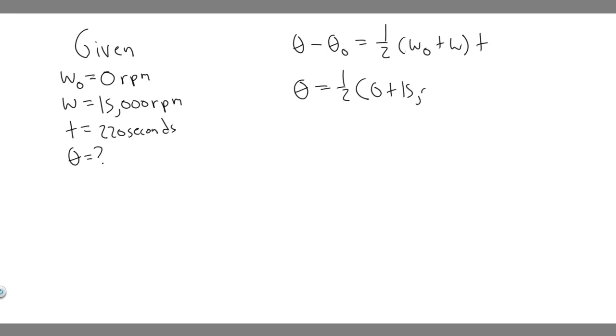If you notice how we write this, if we say 15,000 revolutions per minute, but then we're going to be multiplying by seconds, 220 seconds, what you should notice is that the minute can't cancel with seconds. What we need is this to be seconds so it can cancel with this and then it just is revolutions.